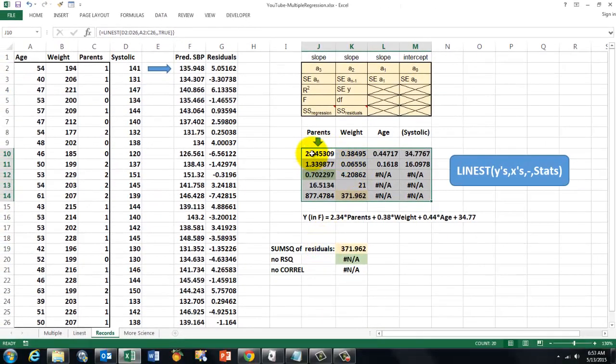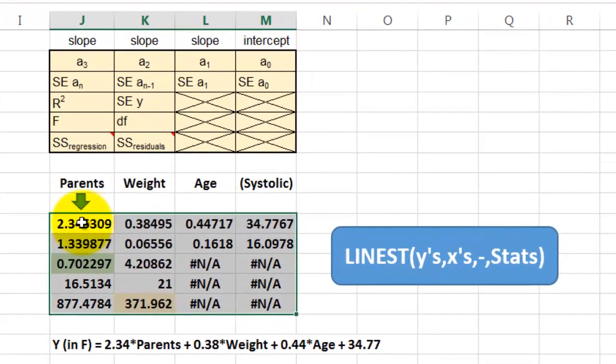So this is the slope of the parents. Be aware of that, not of age, but the last one of the three independent ones. Weight, age, and this is the intercept for the systolic blood pressure.